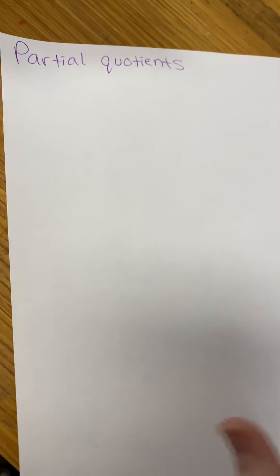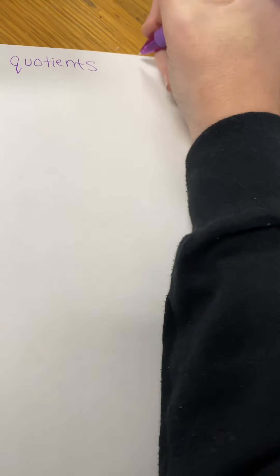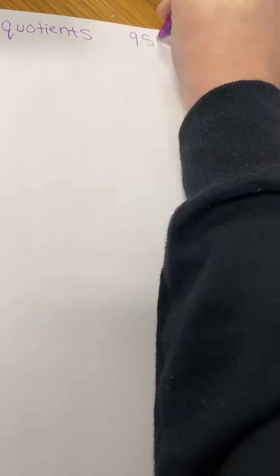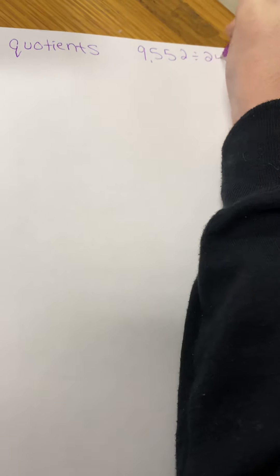Today I will be showing you how to solve a division equation using partial quotients. We are going to take the number 9,552 and divide it by 24.